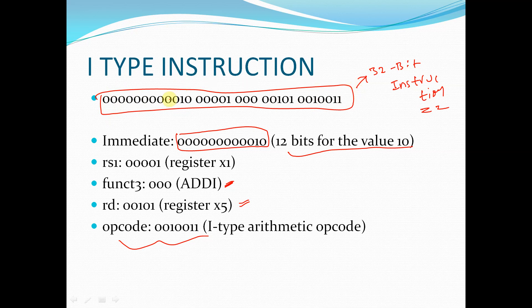We will not worry about the conversion process of how the assembly instruction is converted into binary format. What we are concerned with is analyzing this binary format. There will be a module called the control unit in our processor design, and with the help of this control unit we are going to analyze the instruction in binary format and decide whether it is an immediate, R-Type, or other instruction.